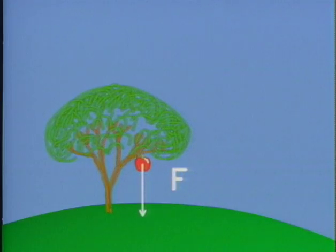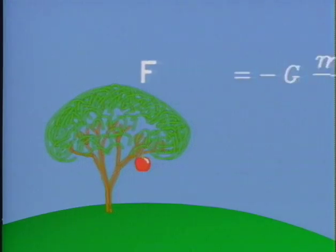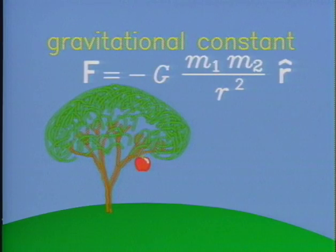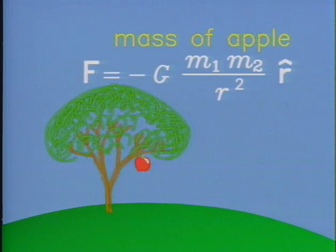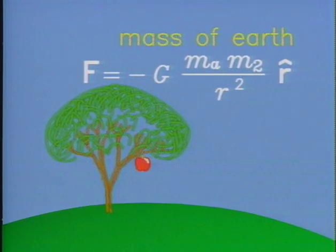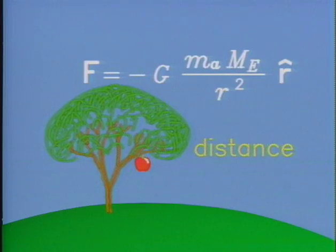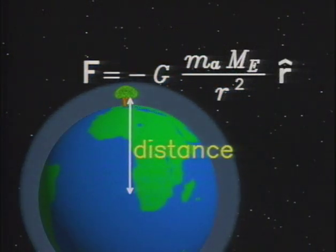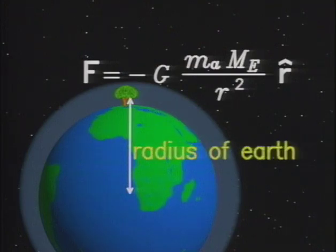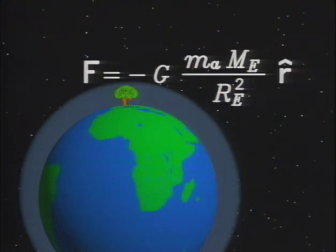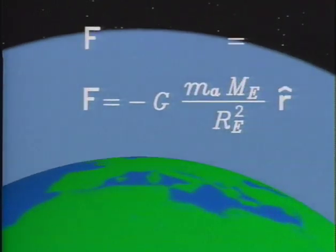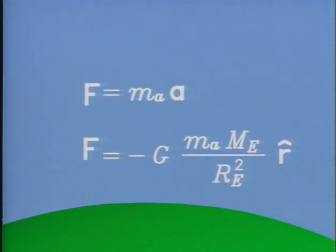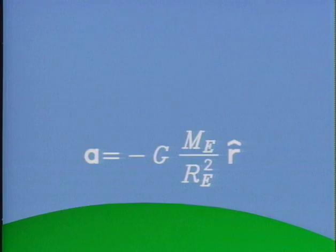The force the Earth's gravity exerts on an apple, for example, is minus G, times the mass of the apple, times the mass of the Earth, divided by the square of the distance from the center of the apple to the center of the Earth. For all practical purposes, that distance is the radius of the Earth. But force is also mass times acceleration. So when made equal, the mass of the apple cancels from the equation, leaving an acceleration that doesn't depend on the mass of the apple.